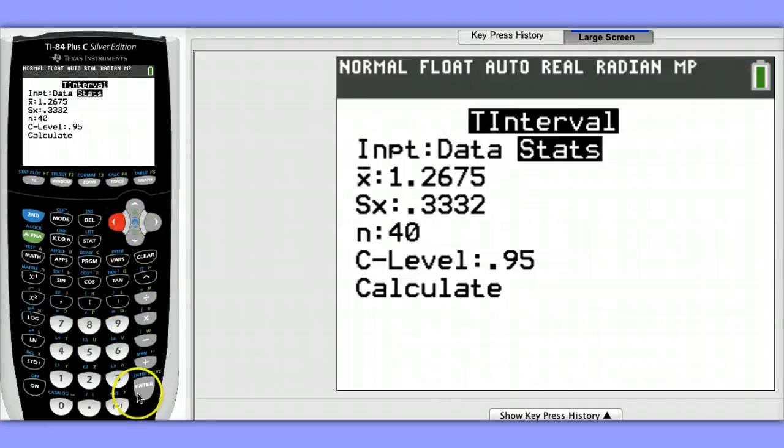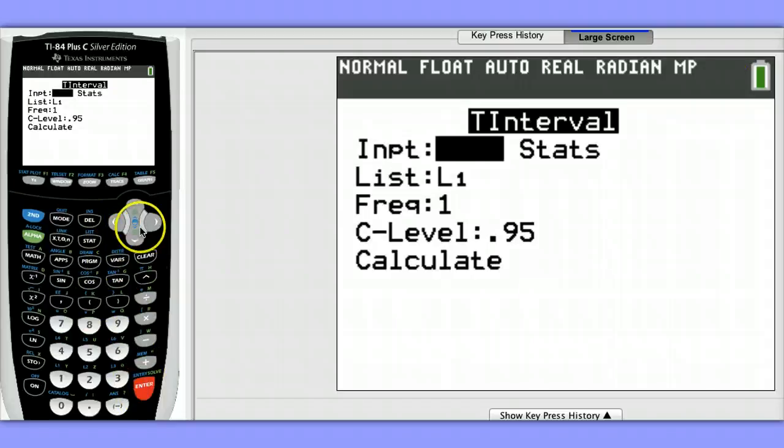I want to use the raw data that I have stored in list one. If you have your data stored in a list other than list one, you'd have to choose the correct list here. All the values have been entered exactly once, so my frequency is one. And my confidence level, I want to change to 90%.